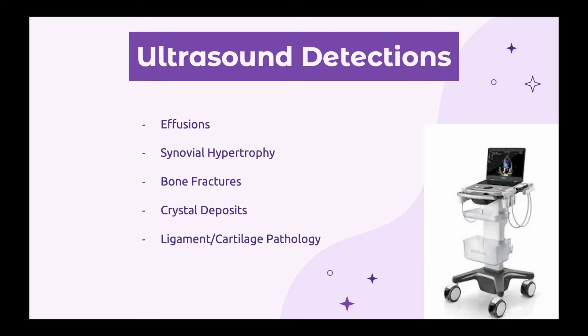Some abnormalities that ultrasound can detect at joints include effusions, synovial hypertrophy, bone fractures, crystal deposits, and ligament or cartilage pathology. I'll be mainly focusing on the knee joint and the process of scanning for joint effusion and leading to the potential arthrocentesis.